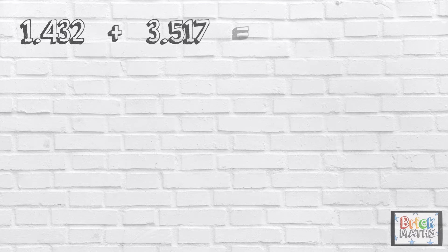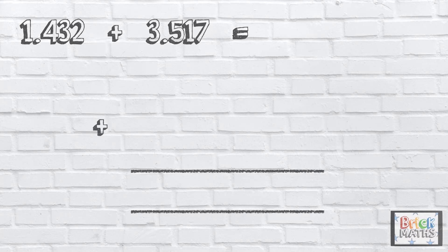Here is a calculation: 1.432 add 3.517. We're going to use column addition to work out the answer. It's really important to line the numbers up correctly when you're doing column addition.